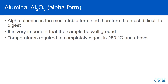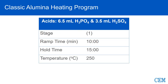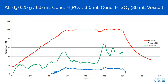Now let's look at alpha alumina, which is a very stable form typically run in a combination of sulfuric and phosphoric acids. This sample really needs to be well ground — if there's a chunk, the surface area is such that it may never digest. To completely digest it, 250°C is the minimum; some forms require 270°C and above. We used 6.5 mL phosphoric to 3.5 mL sulfuric, a 10-minute ramp with a 15-minute hold at 250°C. The pressure sits below 50 psi, so while we're at high temperatures, we're not stressing the vessel — low pressure really helps here.